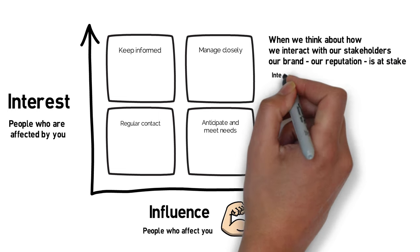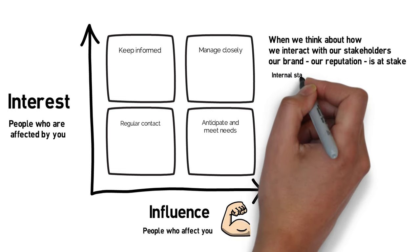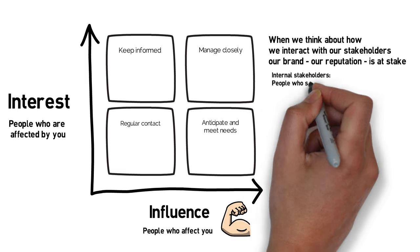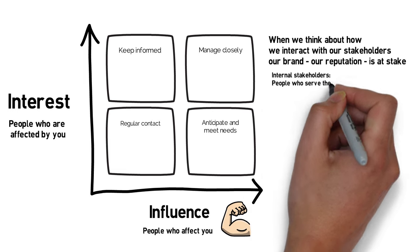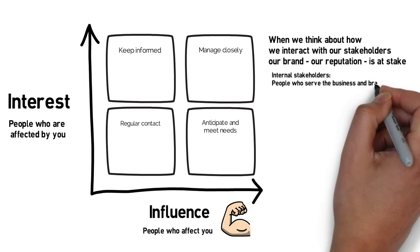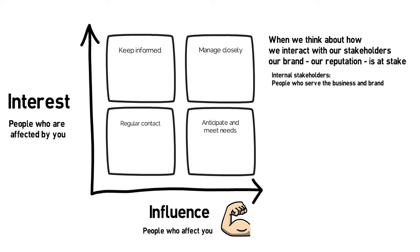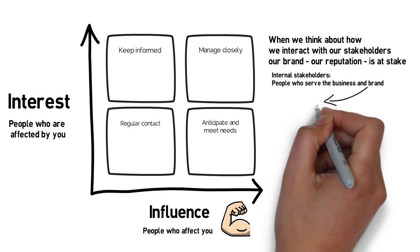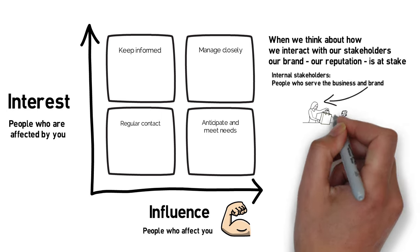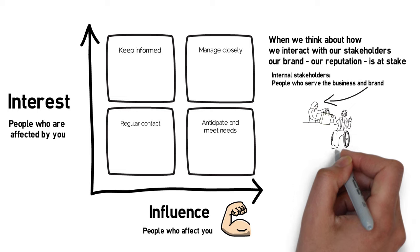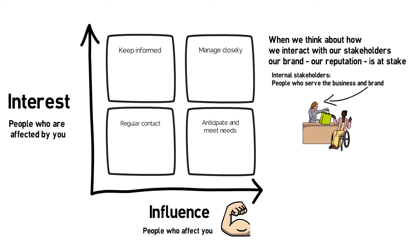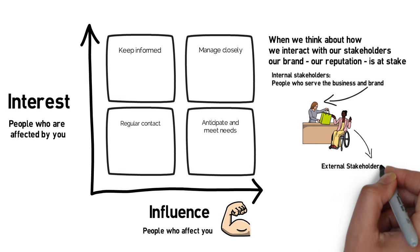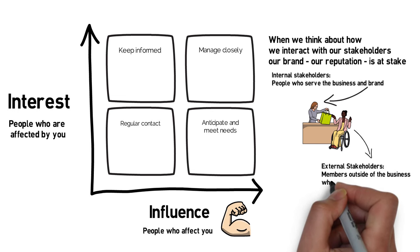There are two different types of stakeholders, broadly speaking. There are your internal stakeholders — people who serve the business and brand, people who are at the frontline working with customers, your employees, your board of directors. And also external stakeholders — members outside of the business who will affect or will be affected by your activities, like your customers.